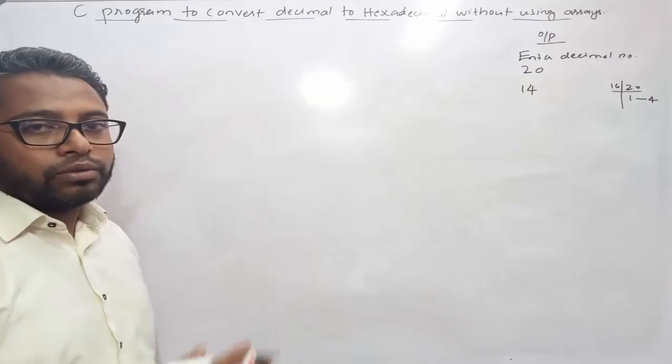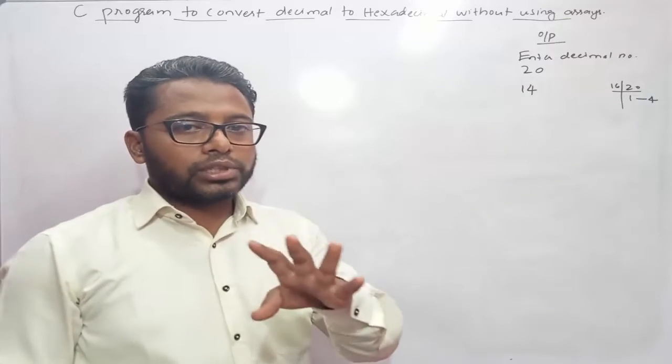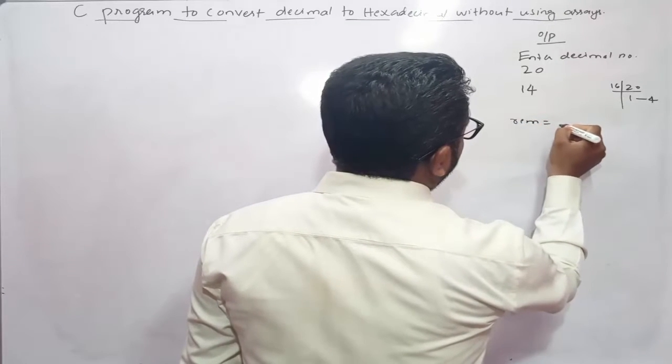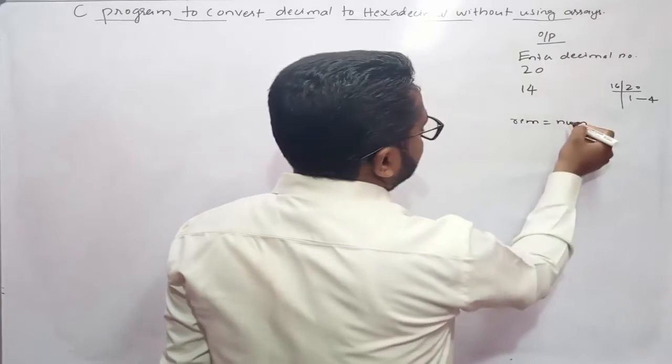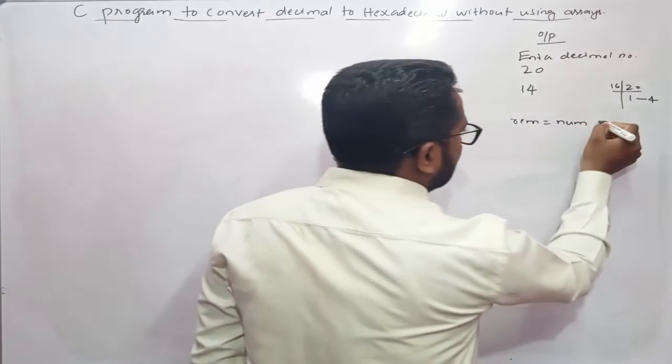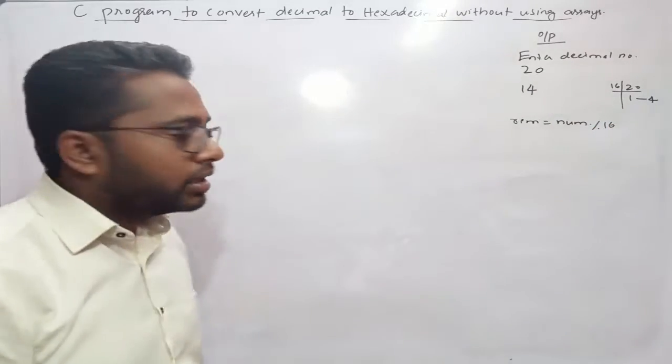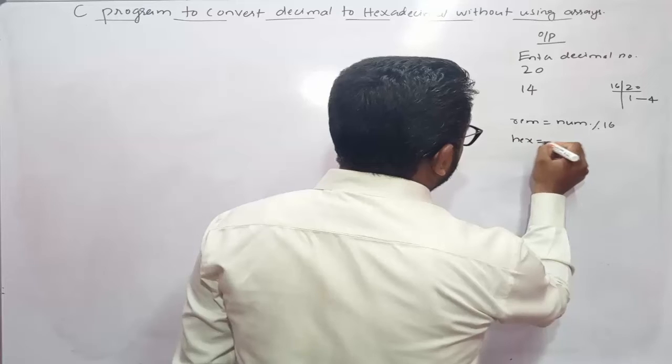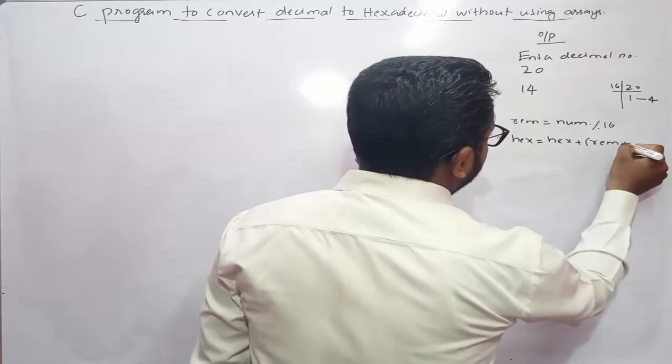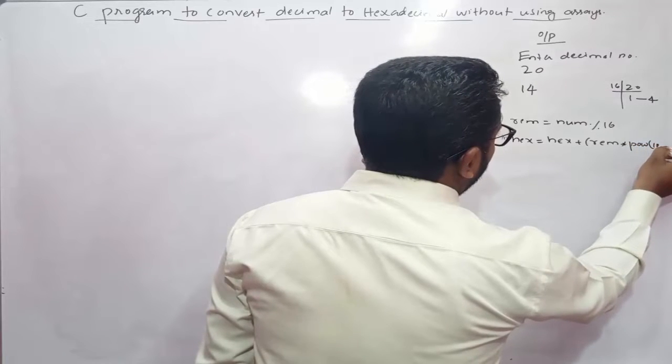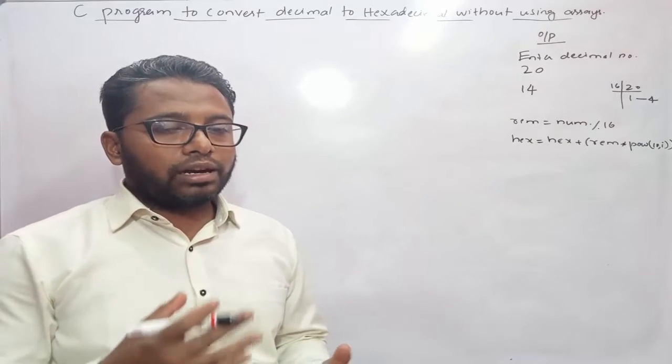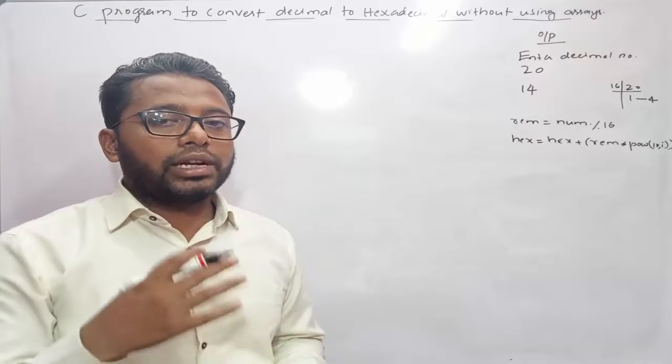Now we need to write the logic of this program. The logic includes four steps. First step is to find the remainder: remainder equals num, this value 20 gets stored inside variable num, num mod 16. Then hex equals hex plus remainder times power of 10 comma i. The i value initially will be 0 and with each iteration the i value gets incremented by 1.